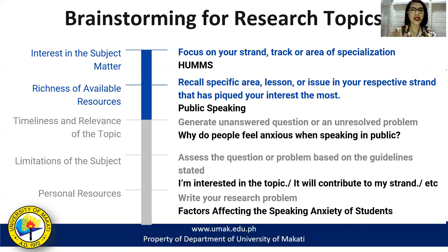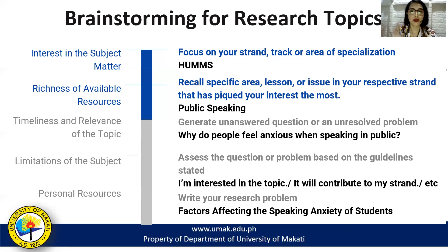For the third step, you must generate unanswered questions or an unresolved problem. For example: Why do people feel anxious when speaking in public? Or for HRS: How can people easily avail restaurant services during the pandemic? Fourth, assess the question or problem based on the guidelines stated — are you interested in the topic, and does it contribute to society? Last, write your research problem, for example: 'Factors affecting the speaking anxiety of students,' or for HRS: 'Effective ways on how to deliver restaurant services to customers during the pandemic.'